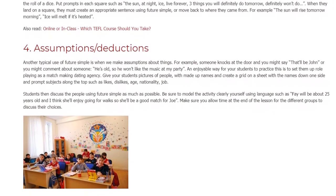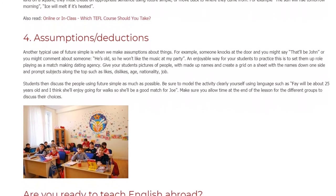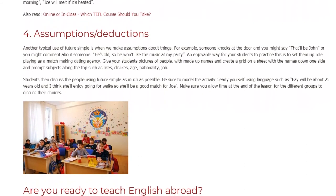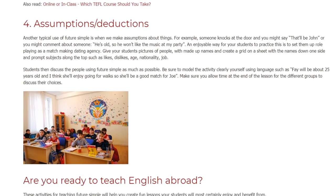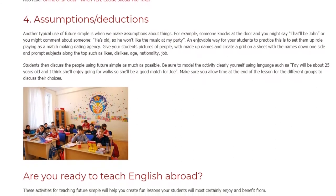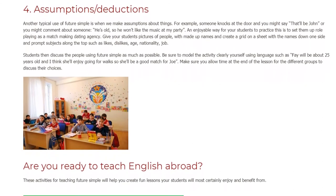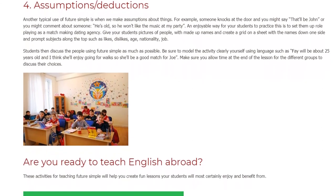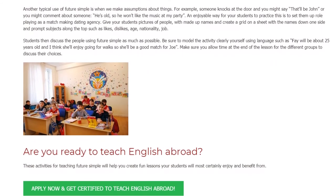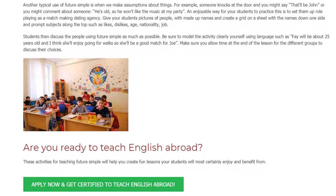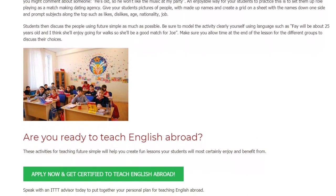An enjoyable way for your students to practice this is to set them up role-playing as a matchmaking dating agency. Give students pictures of people with made-up names and create a grid on a sheet with the names down one side and prompt subjects along the top, such as likes, dislikes, age, nationality, job. Students then discuss the people using Future Simple as much as possible. Model the activity clearly using language such as: 'Faye will be about 25 years old and I think she'll enjoy going for walks, so she'll be a good match for Joe.'